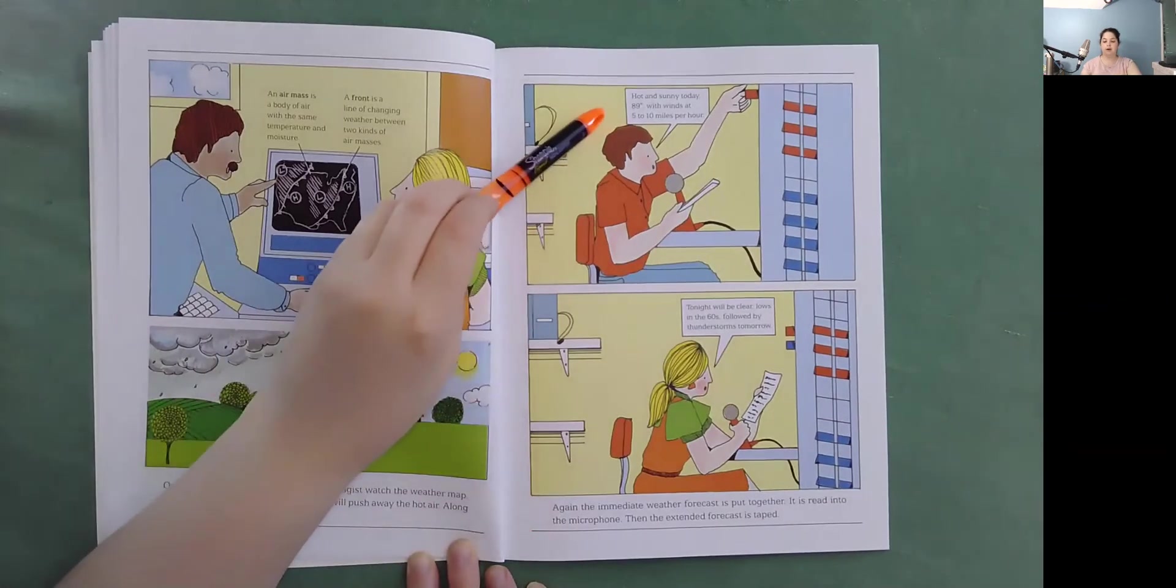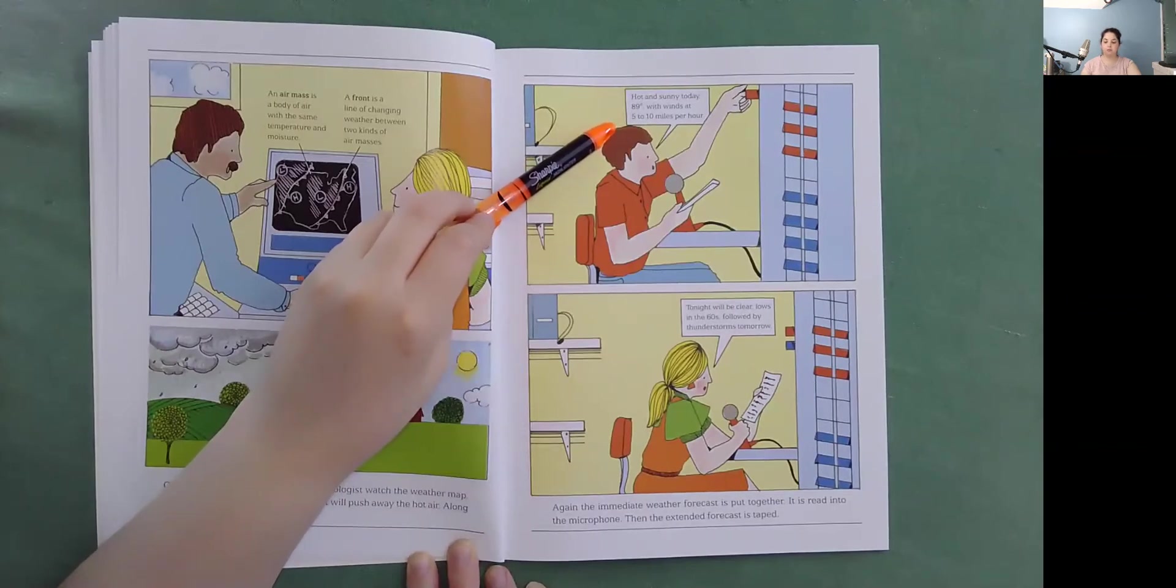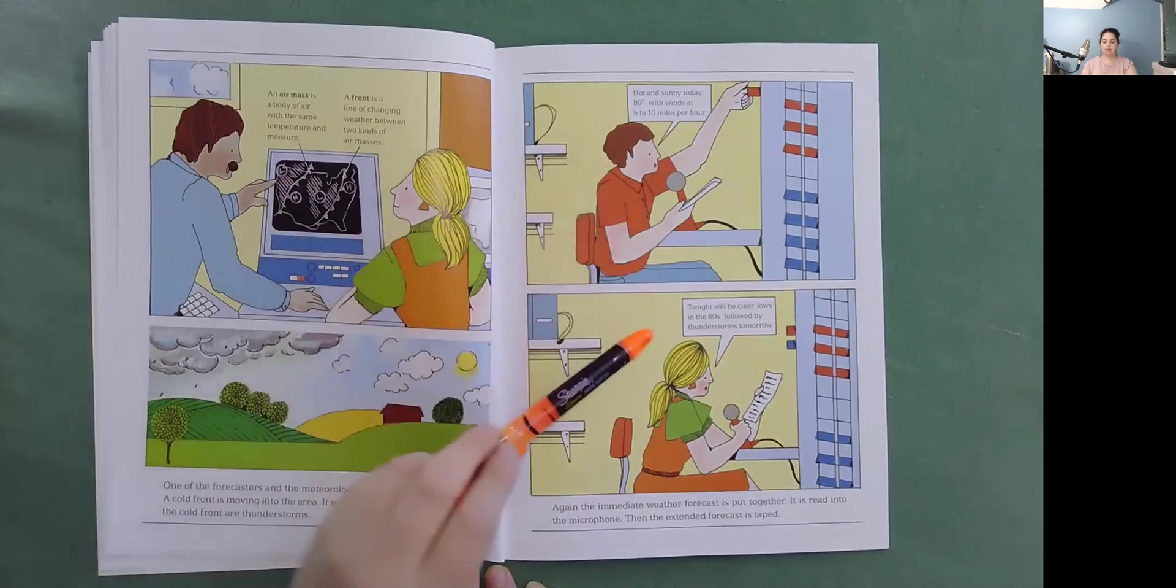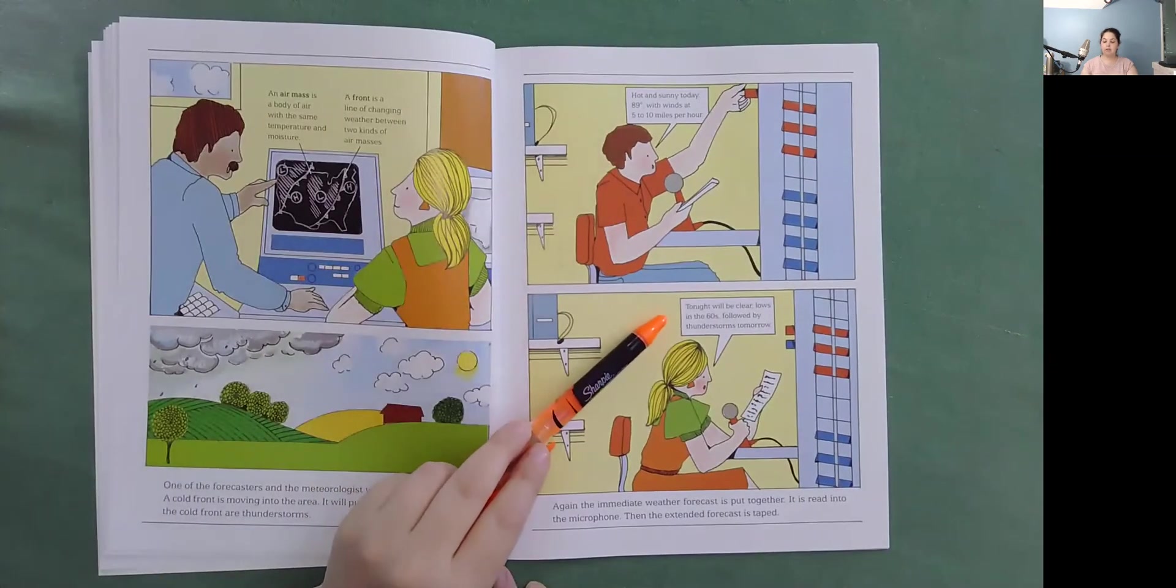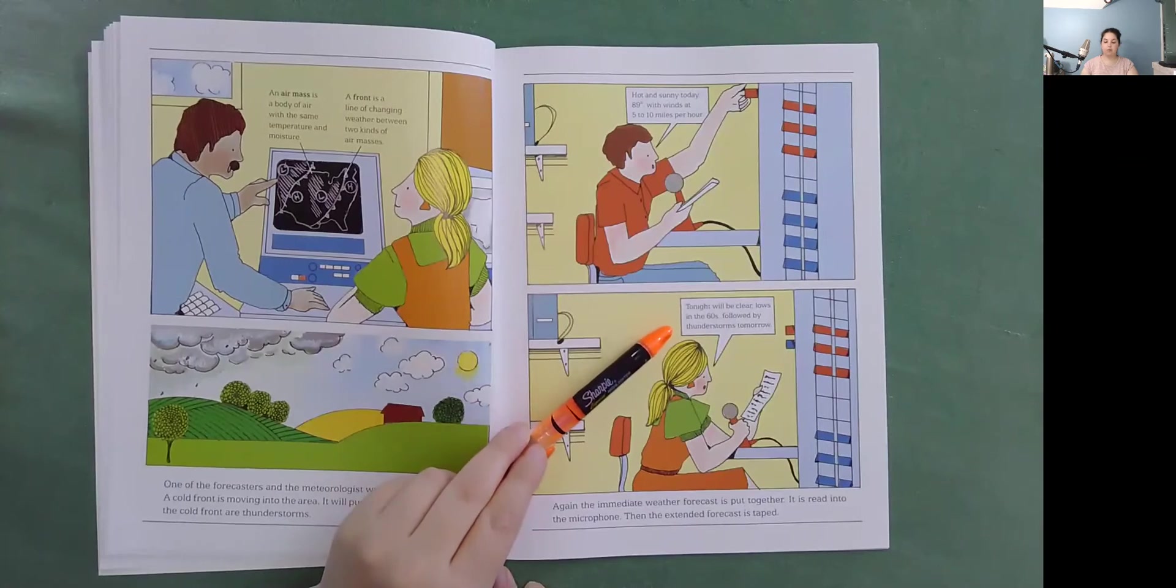So, the immediate forecast is hot and sunny today. 89 degrees with winds at 5 to 10 miles per hour. And then, the extended forecast. Tonight will be clear. Lows in the 60s. Followed by thunderstorms for tomorrow.